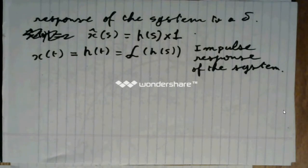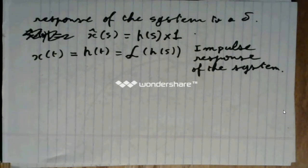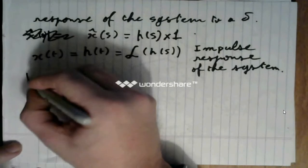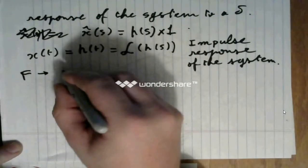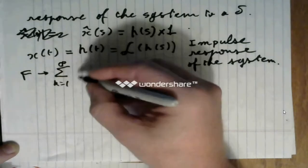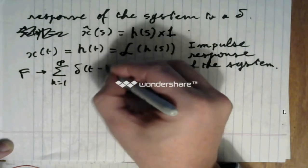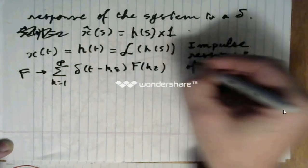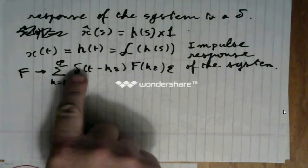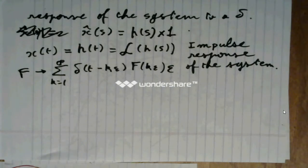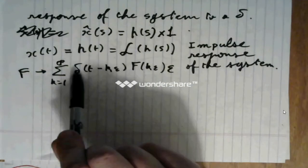Now, the interesting part is that we have an approximate expression of any function f, any input f, as a sum from k equals one to infinity of delta of t minus k epsilon, times f of k epsilon, times epsilon. And what we see is, by linearity, the response of the system to such an input will be the sum of the response to every single component here.